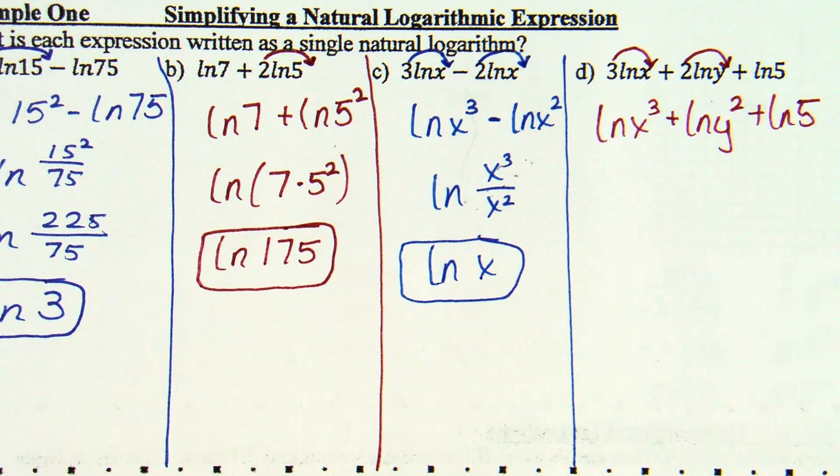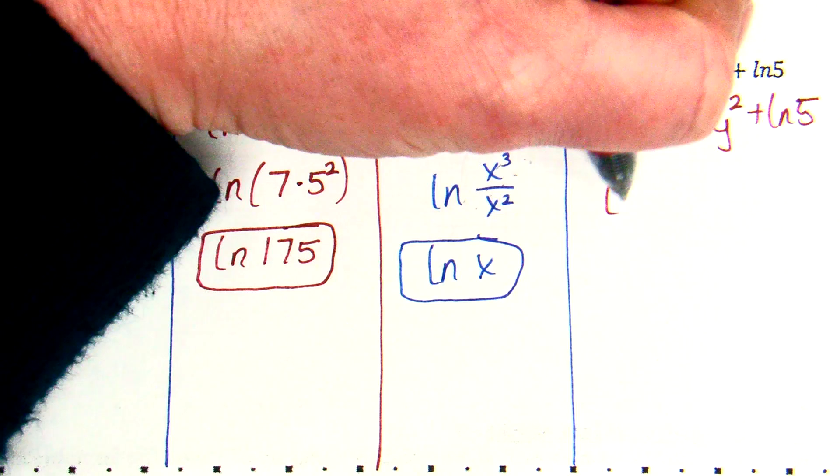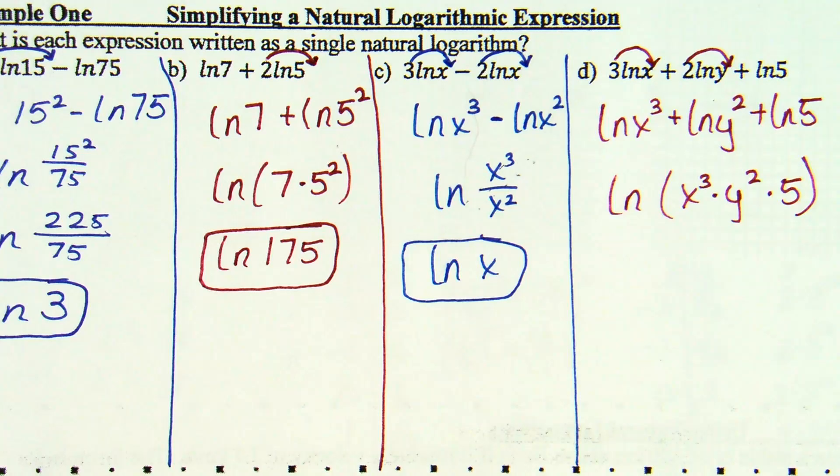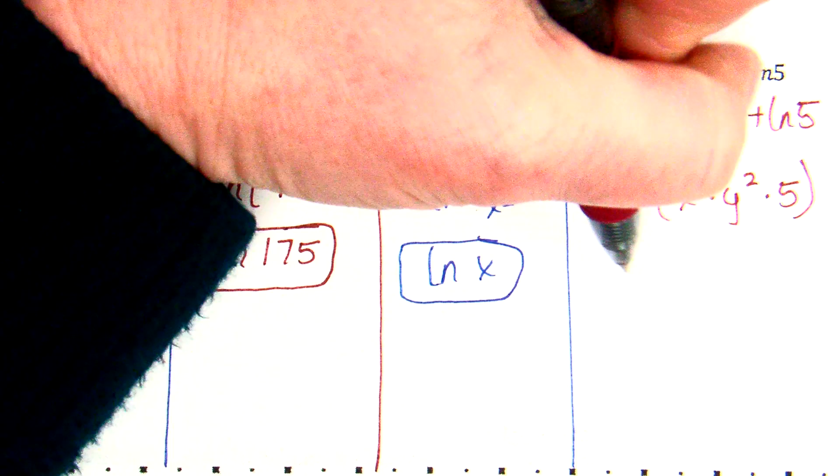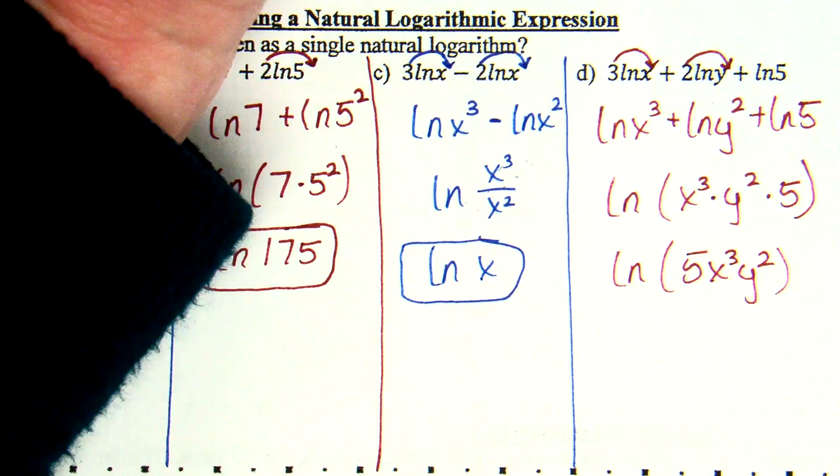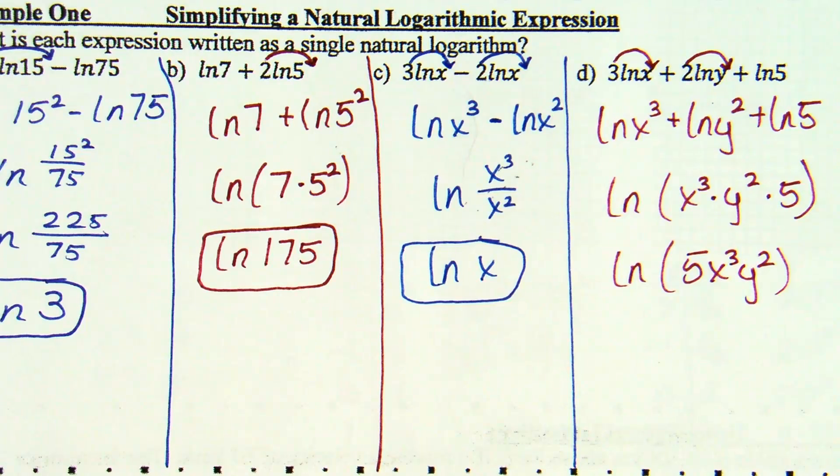What's next? So then, power property says if you have logs being added, we write it as one log where the insides are multiplied. So this is the natural log of X to the third times Y squared times 5. I just wrote it in that order it was given. Could I make it a little neater? Yeah, if you put the 5 in front of the X and the Y. It's a little bit neater. So I can write it as the natural log of 5 X cubed Y squared. Not the 5 out front of the whole log. Just in the front of the inside of the log there. Anything else? No.